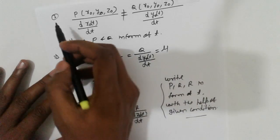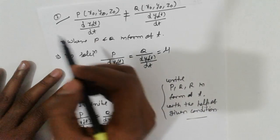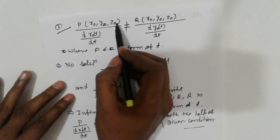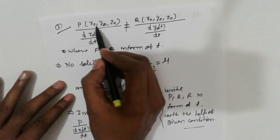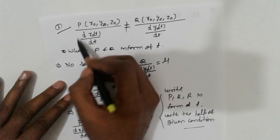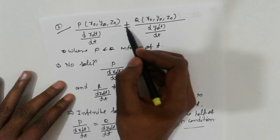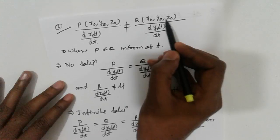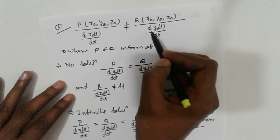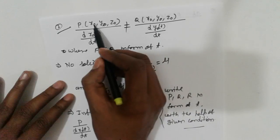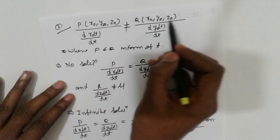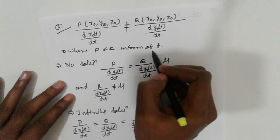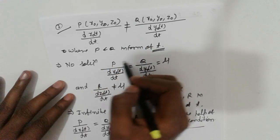The second condition: if p times dx₀/dt equals q times dy₀/dt — that is, when expressed in terms of t, p and q satisfy this proportionality — we get the no-solution case.